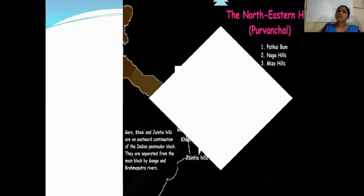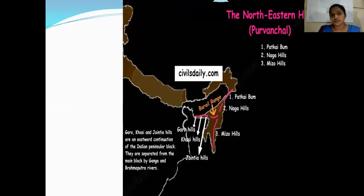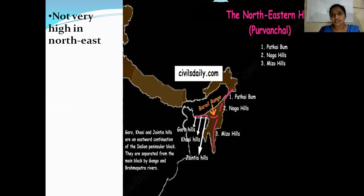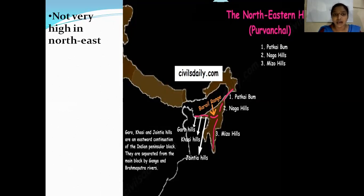In the northern mountains, which consist of the Karakoram ranges and the Himalayas, we have some important hill ranges: Garo, Khasi, Jaintia, Naga, and Mizo. These are some of the important hill ranges located in the northern mountains.